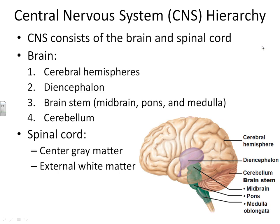As we ended the first part of our lecture, we were finishing up our discussions of the cerebral hemispheres. Just to recap, as we look at our entire brain, the outer parts here — this is our cerebrum. Now in the second part of the lecture, we're going to move a little deeper into the brain and go over the different parts of the diencephalon, then the different parts of the brain stem, and we'll finish with the cerebellum.